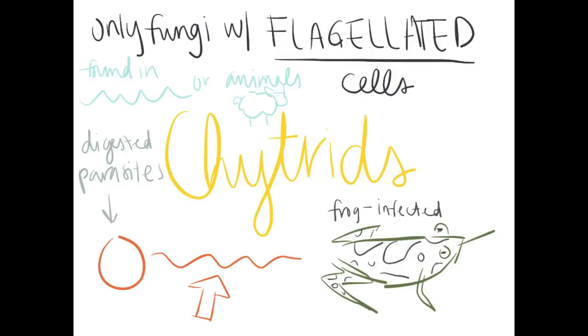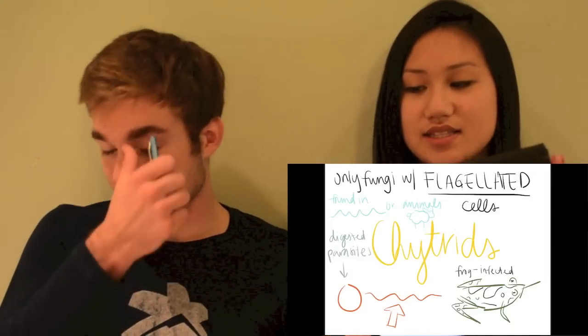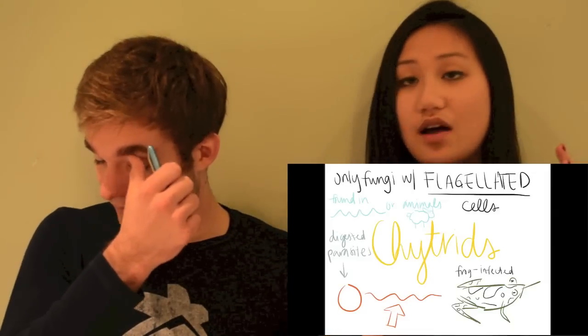The first group we're going to talk about is the chytrid. The chytrid is the only fungi with flagellated cells, so that means they swim around, and you can find them in ponds and inside organisms. They're commonly found as parasites inside other animals like sheep guts and frogs.